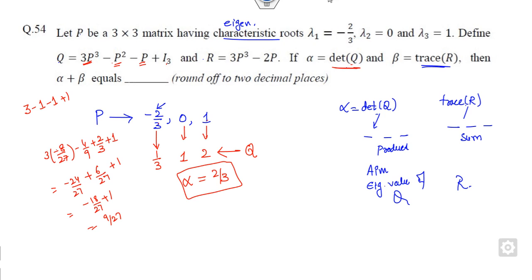How you can find the eigenvalue of R? You can substitute the values one by one here. These are the eigenvalues of P. Now find the eigenvalues of R. If you substitute 2/3 here, it will be minus 8/27 plus 4/3, so minus 8/9 plus 12/9, that is 4/9. If 0, then 0 minus 0 is 0. If it is 1, then it is 1.